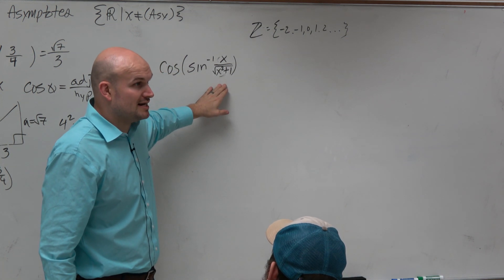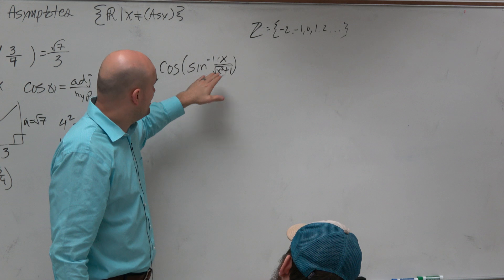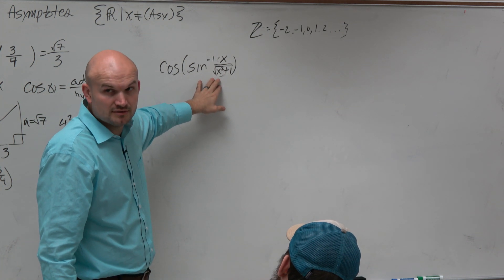We don't know if this point's on the unit circle or not, right? We don't know. So again though, can we represent this as a triangle, right?